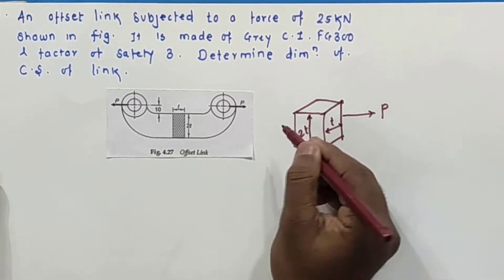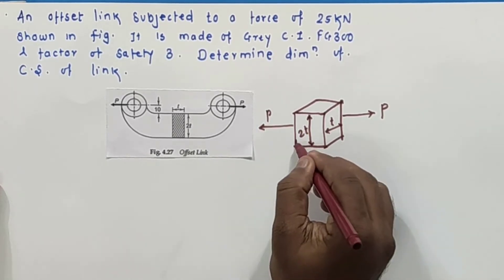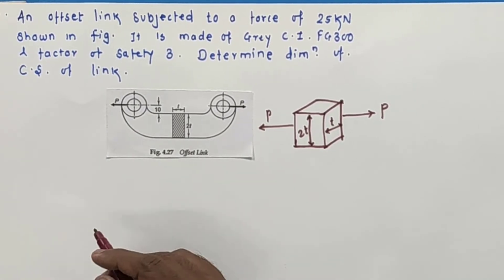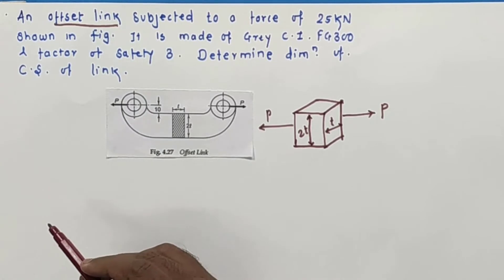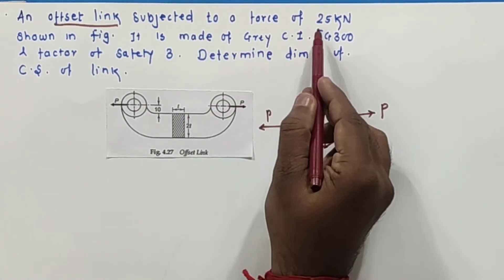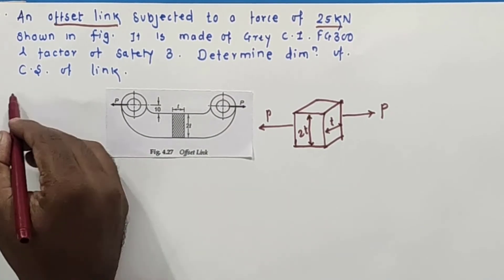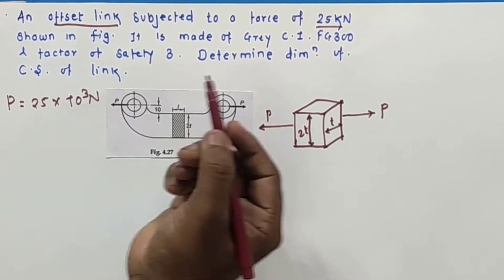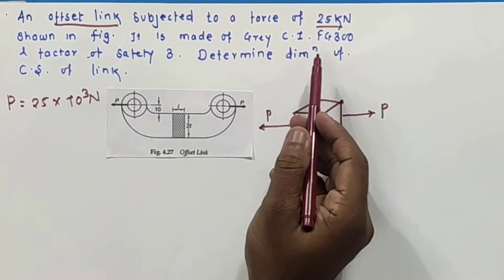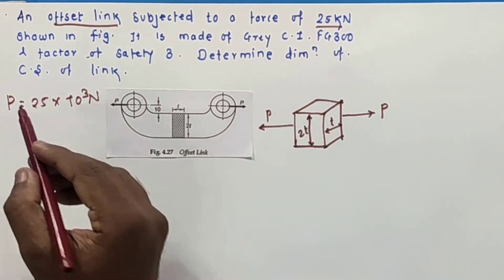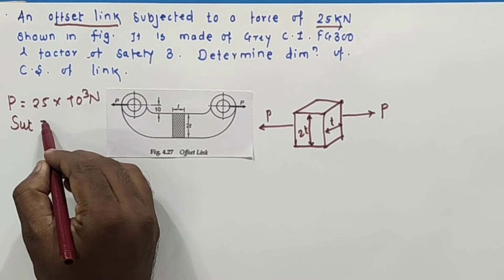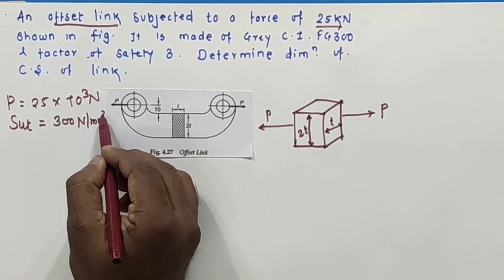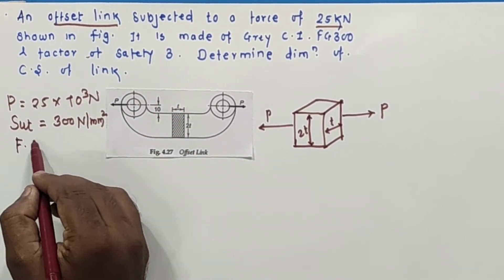A pulling force P is acting on the structure, which means maximum tensile stress is acting on it. The offset link is subjected to a force of 25 kN, so P equals 25 kN. It is made up of grey cast iron FG 300, so this will be SUT because grey cast iron is a brittle material. SUT is 300 N per mm square with a factor of safety of 3.